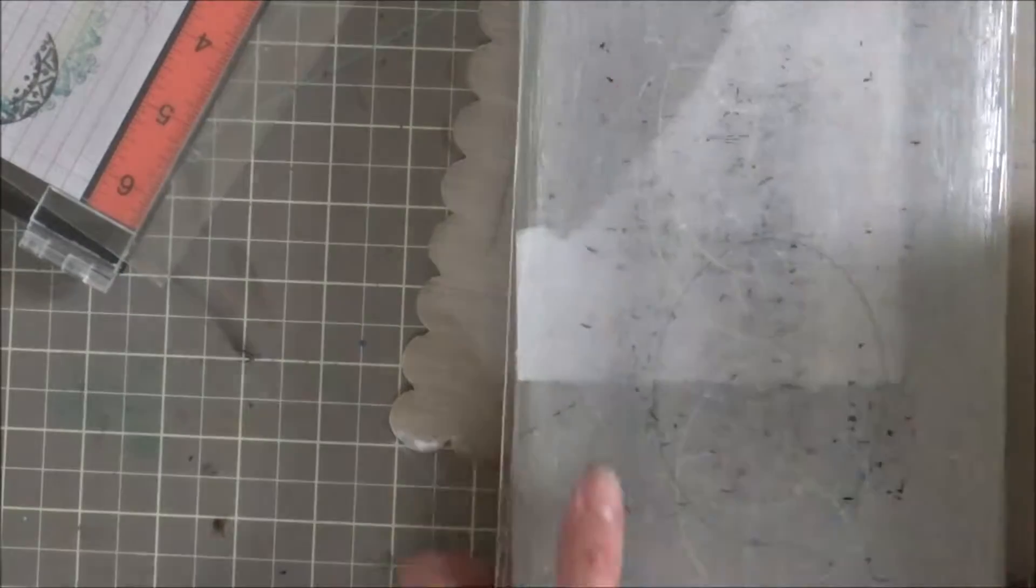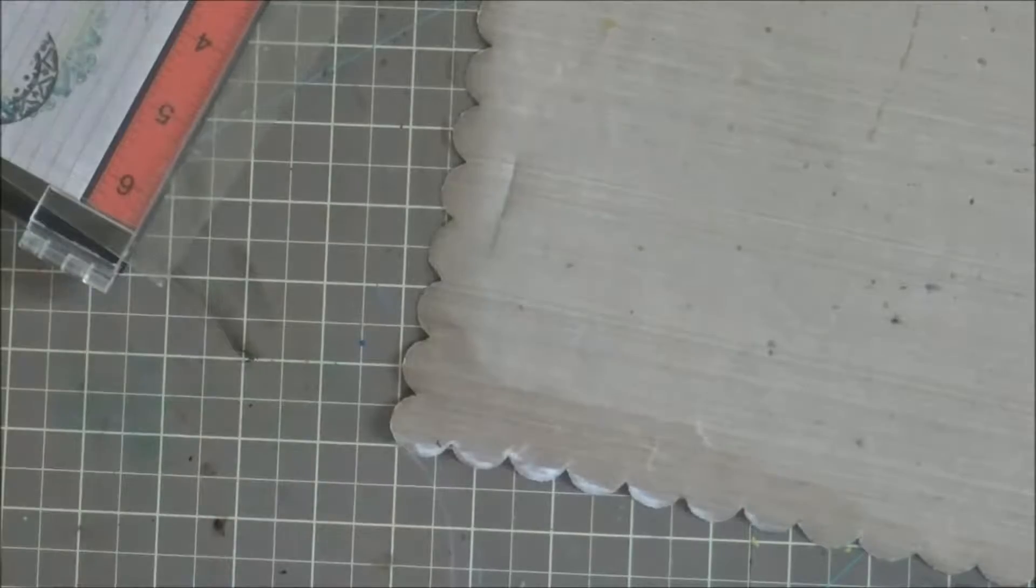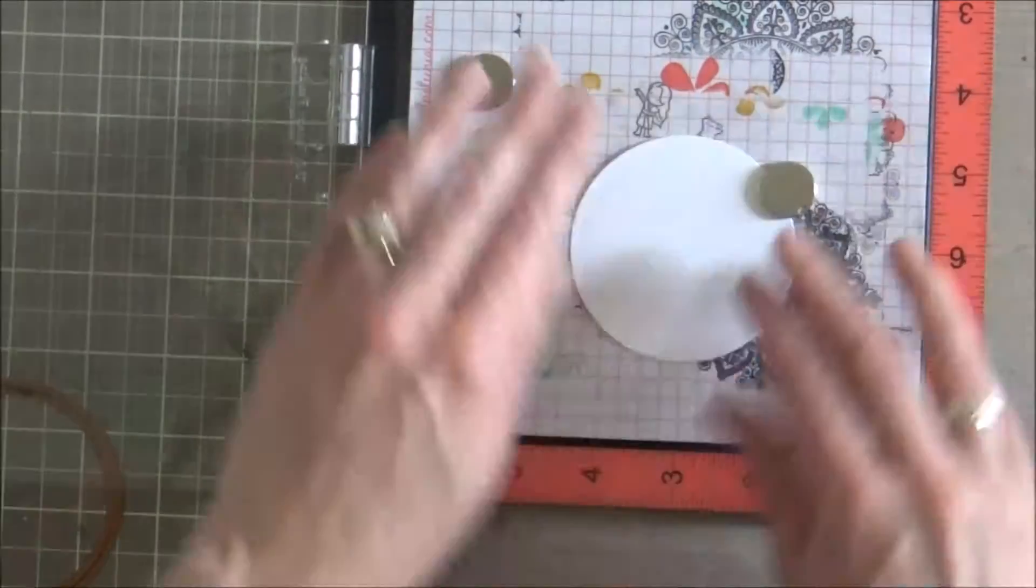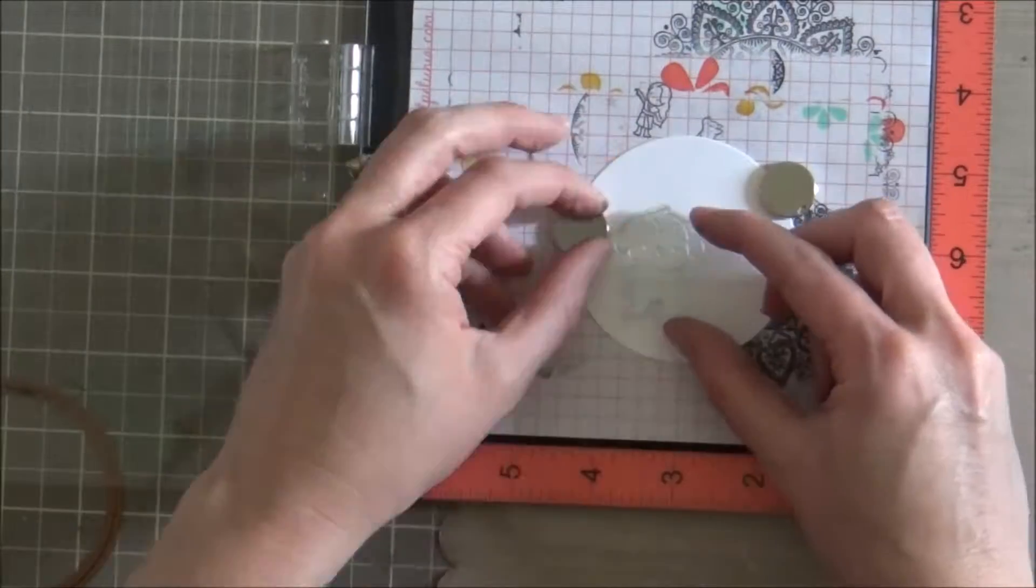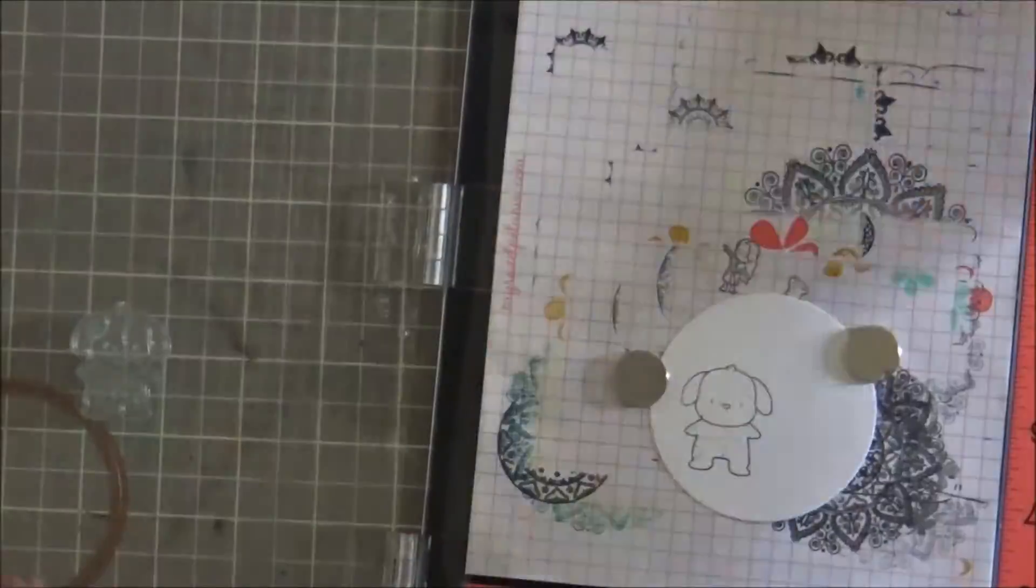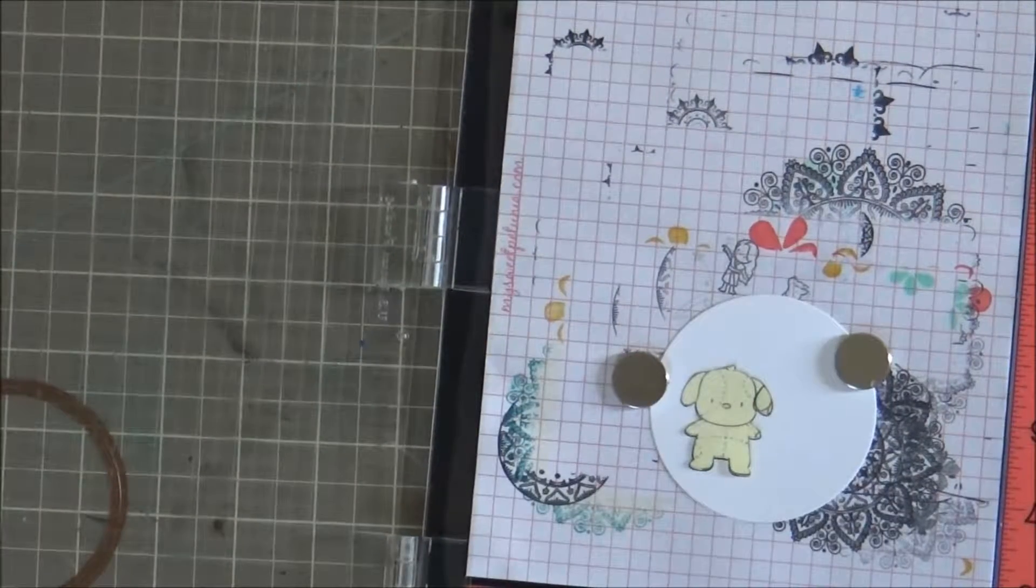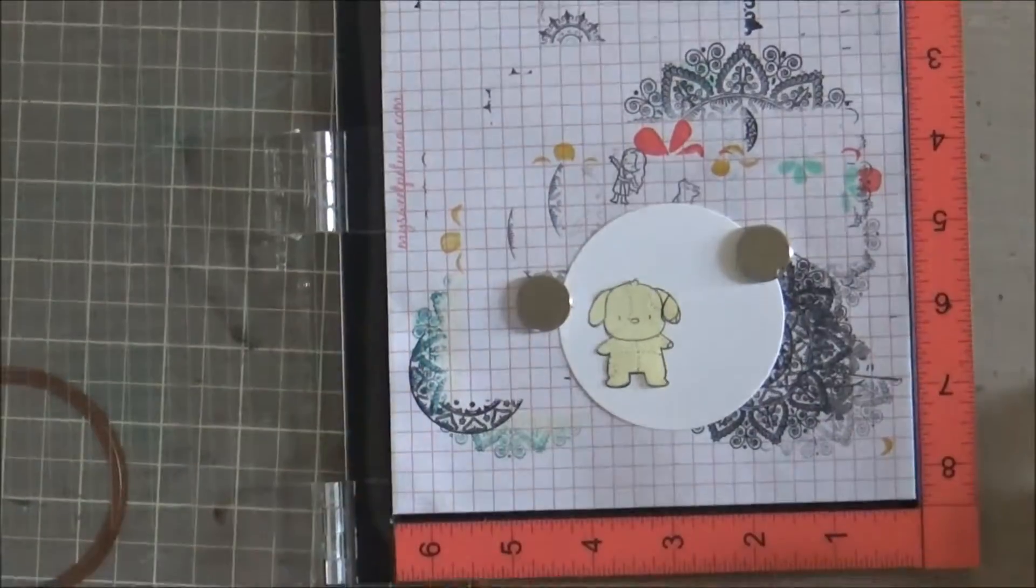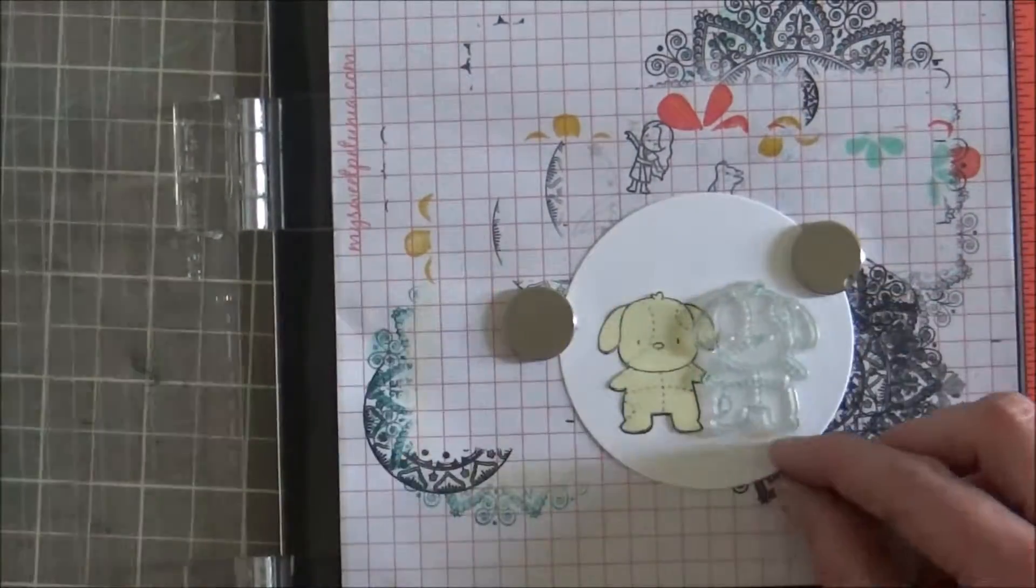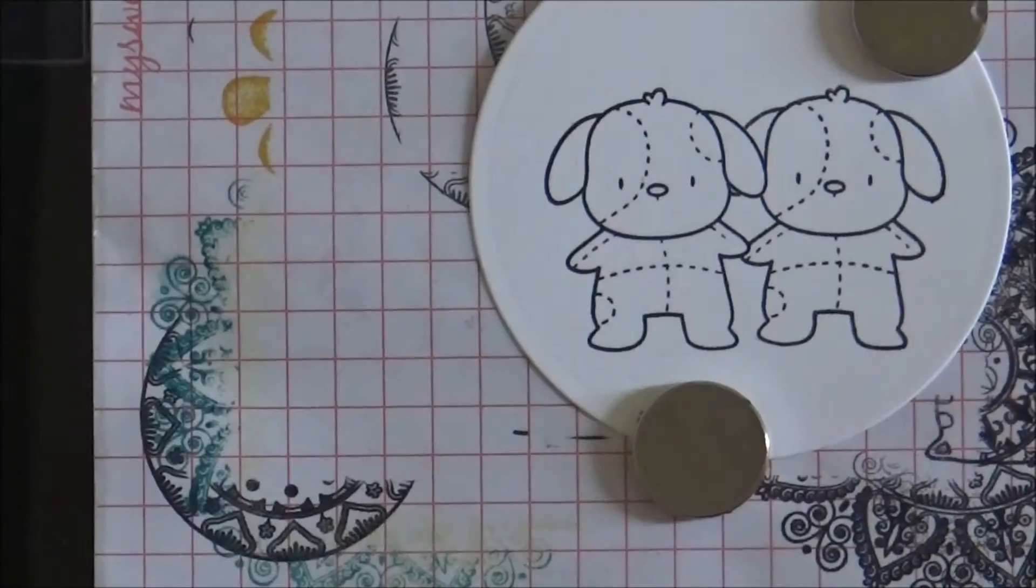My first step was to die cut a circle. I'm just using a Spellbinders die and Neenah Solar White cardstock on my tabletop cutter. And now I've got my circle and I'm going to use my Misti. I find that these stamps that are the combination of Mama Elephant and Hampton Arts do require a couple of stamps, so I always use a Misti with those. So I've got my first puppy and then just applying a mask made out of a post-it note. I wanted my puppies pretty close to look like they were holding hands so they can overlap.